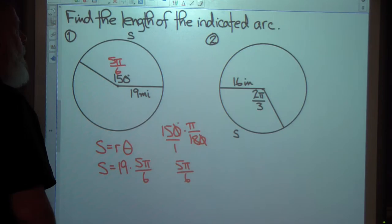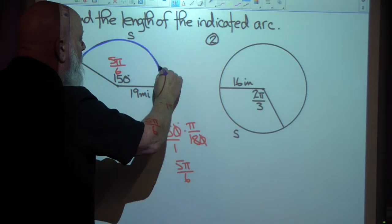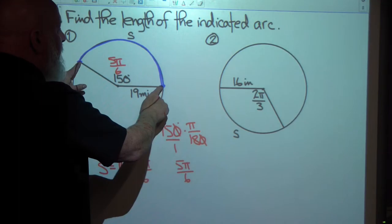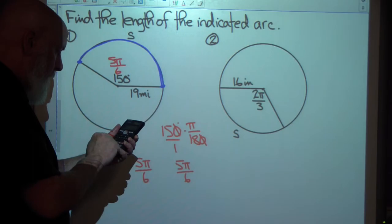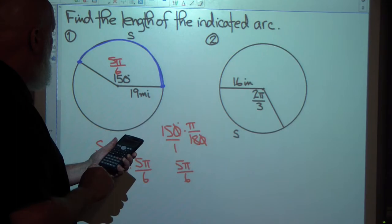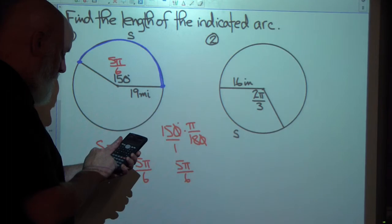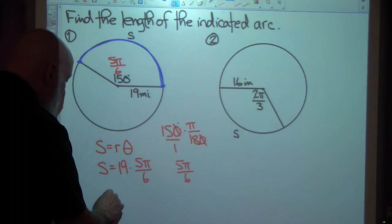We use our calculator and it doesn't say what to round it to. So we'll round it to something reasonable. And we're looking for the length of this arc. We want to know how long would this be if I snipped it here and here and straightened it out. We're going to go 5 pi over 6. 5 times pi divided by 6 times 19. 49.74. So that's the length of this arc.